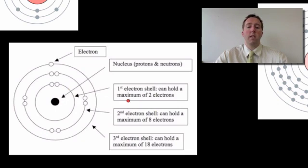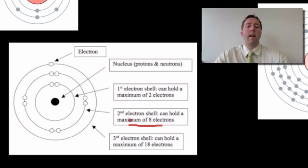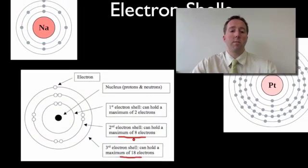The first shell of sodium can only hold a maximum of two electrons. So if an atom has three electrons, two will go in the first shell but the next one will have to go into the second shell. The second electron shell can hold a maximum of eight electrons, and the third shell can hold a maximum of 18 electrons.